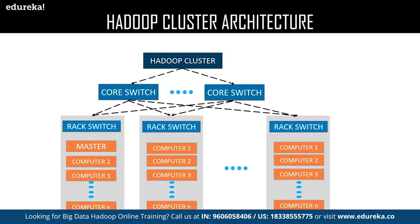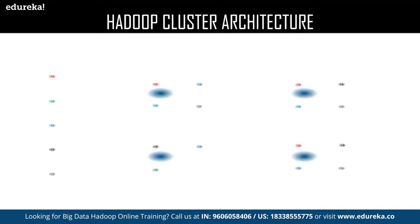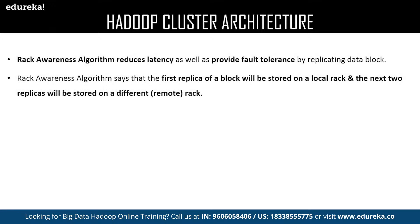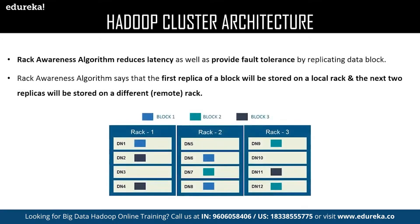Now let us have a look at the overview of Hadoop cluster architecture, followed by the rack awareness algorithm. The architecture consists of racks; each rack contains a set of computers, and one of the racks contains the master. These racks use a core switch to communicate between each other. The rack awareness algorithm is all about data storage: the first replica of the actual data must be located in the local rack, and the rest of the replicas can be stored on a different remote rack.